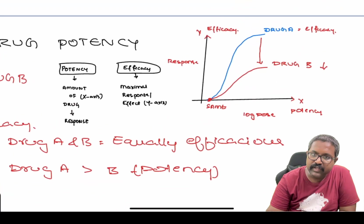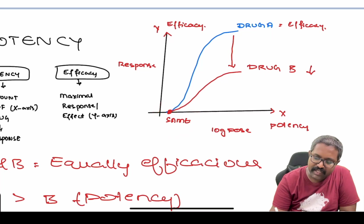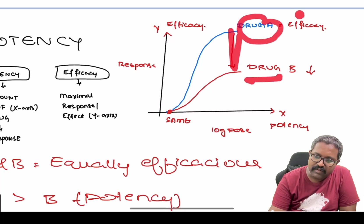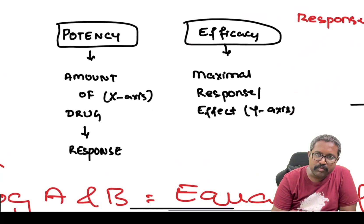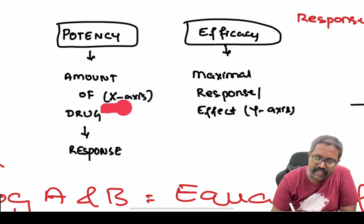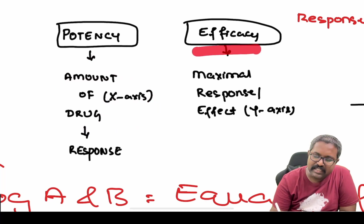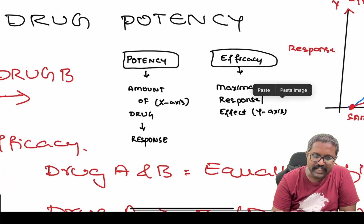In the second graph, drug A and drug B have similar potency, but the height of drug A is greater than drug B, so drug A has greater efficacy while drug B's efficacy is reduced. To summarize the definitions: potency is the amount of drug required to produce the response, represented on the x-axis; efficacy is the maximal response to the administered drug, represented on the y-axis.